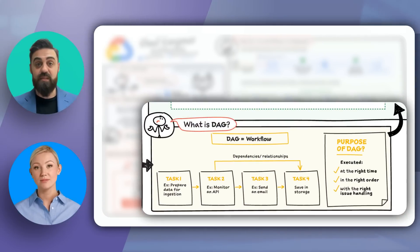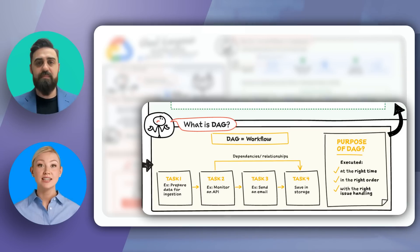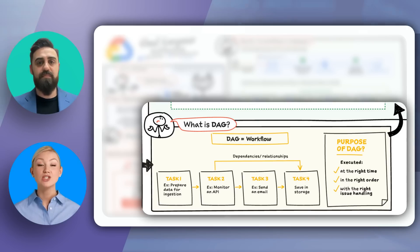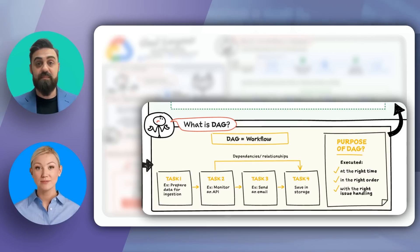Let's get into the nuts and bolts. What is a DAG in the context of Apache Airflow? A DAG, or directed acyclic graph, represents a workflow in Airflow. It consists of tasks with defined dependencies and execution order, ensuring your data flows correctly through each stage.